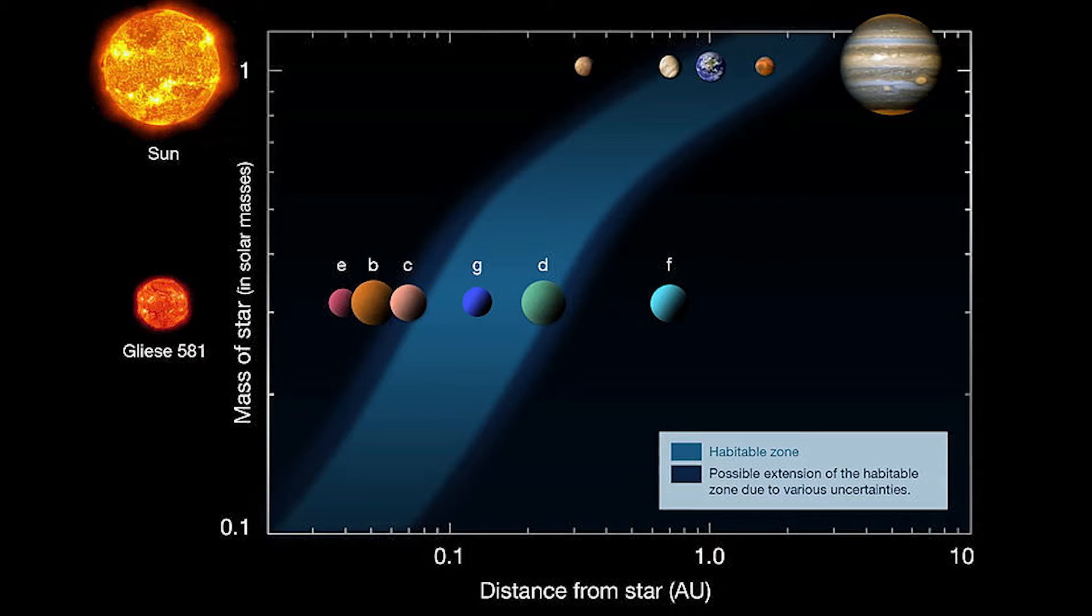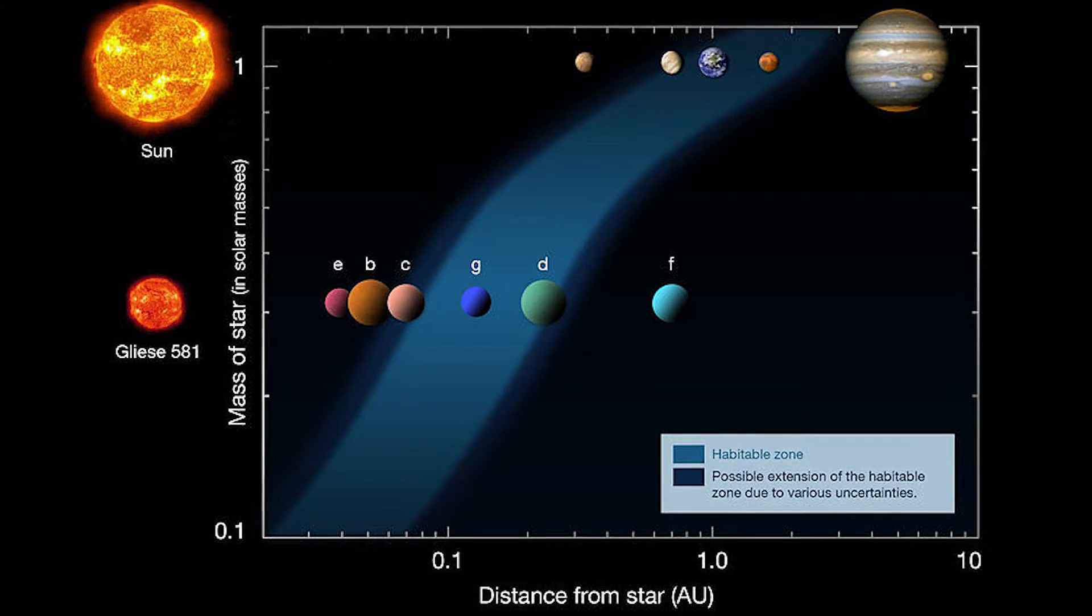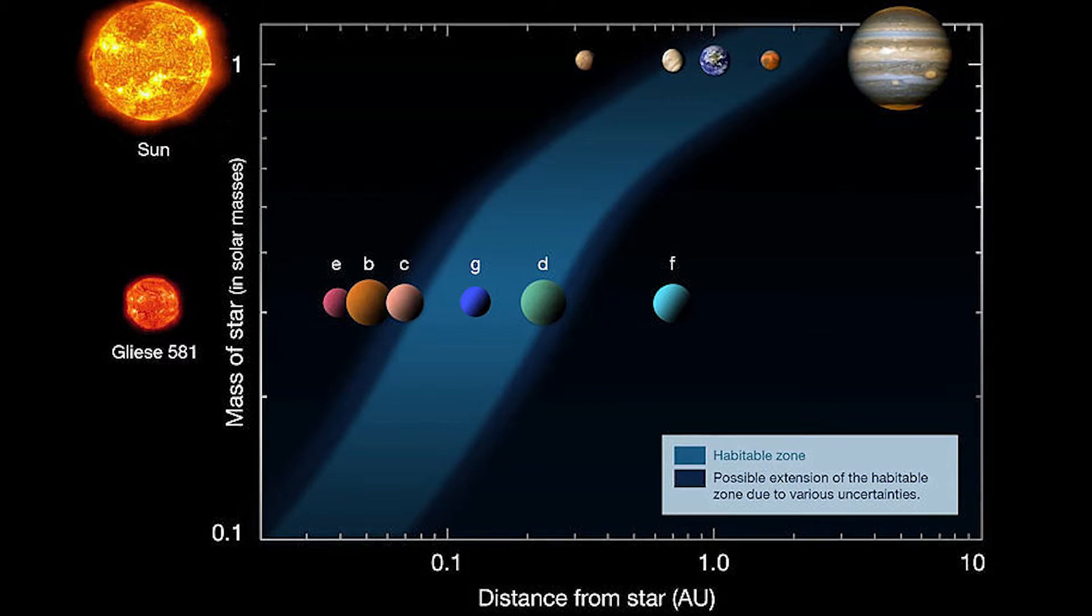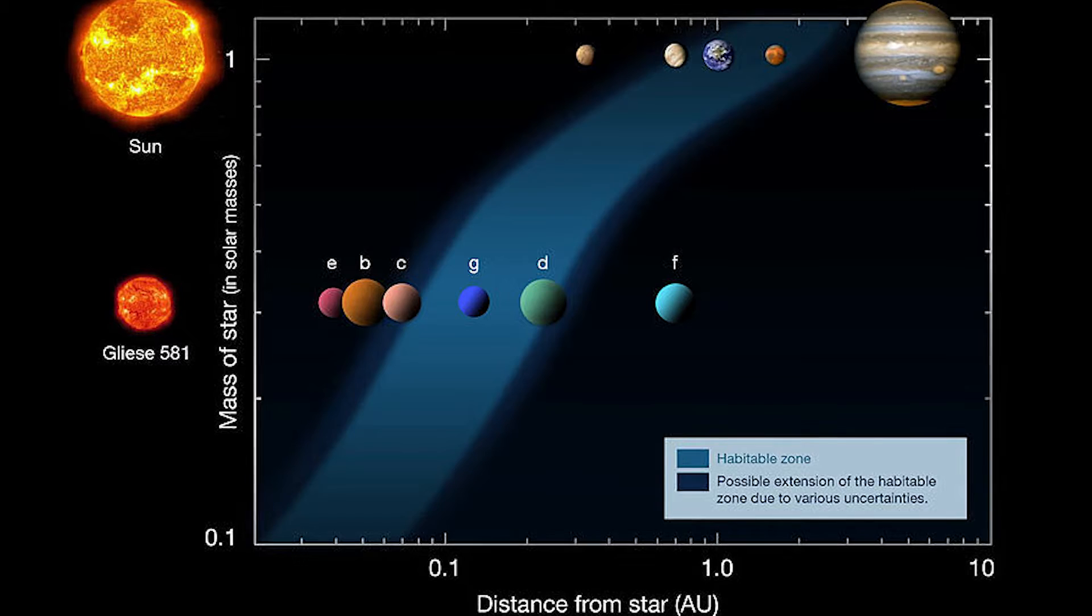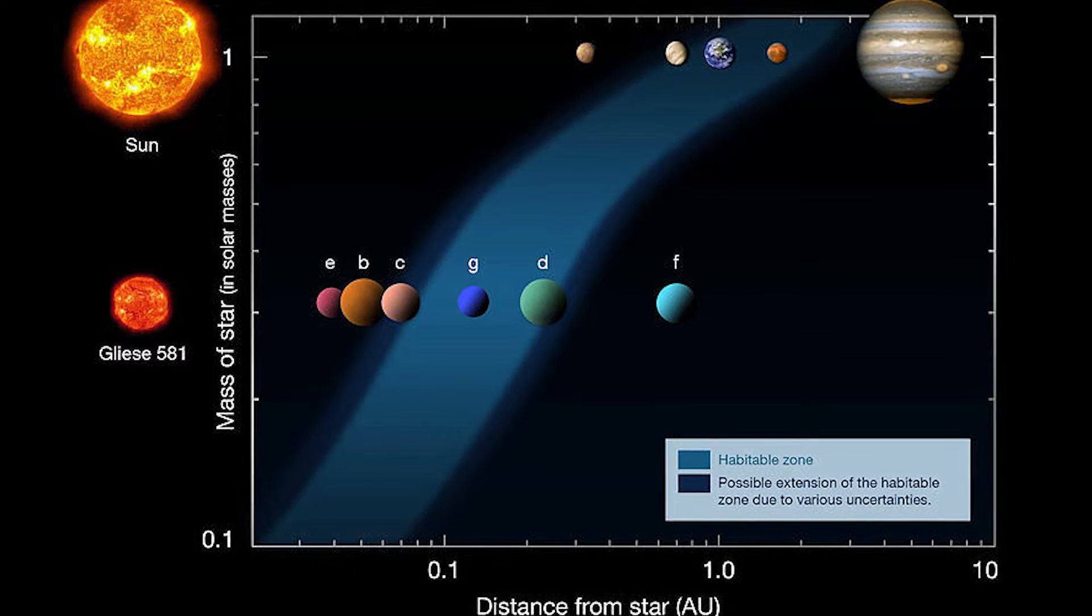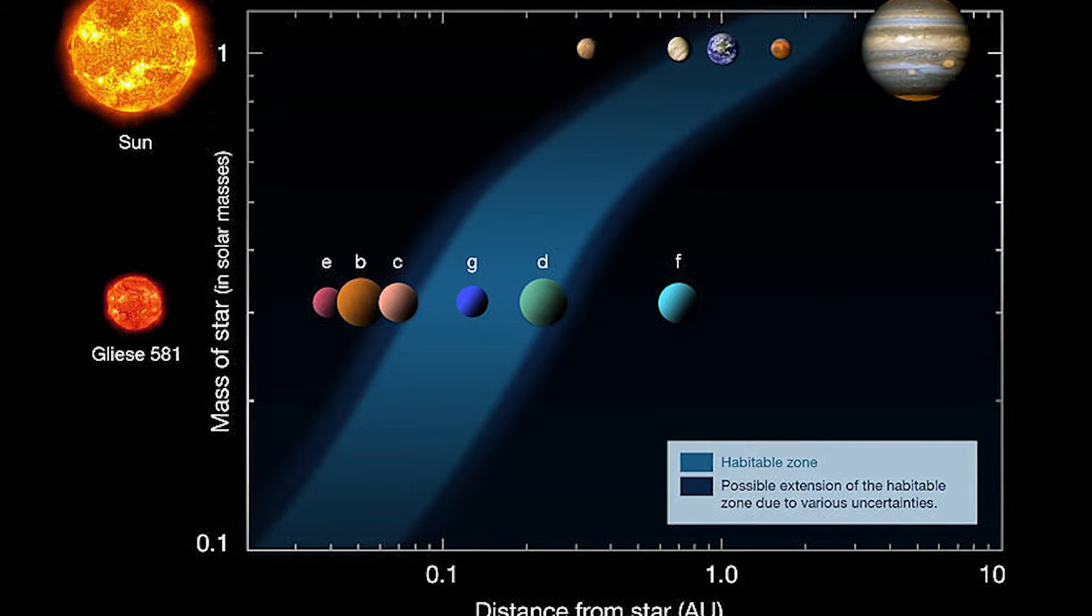Gliese 581g is estimated to be 0.15 astronomical units from its star, putting it within range for a 37-day orbit. The average distance between Earth and the Sun is measured in astronomical units, with one unit equal to around 93 million miles, or 150 million kilometers.